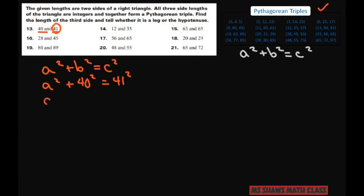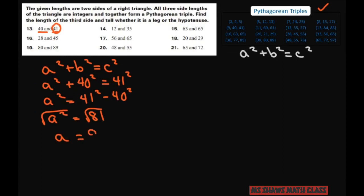So you get a² = 41² − 40². You subtract from both sides, so that gives you a² = 81. You take the positive square root of both sides, so you get a = 9. Now that's going to be a leg because it's the smallest side.